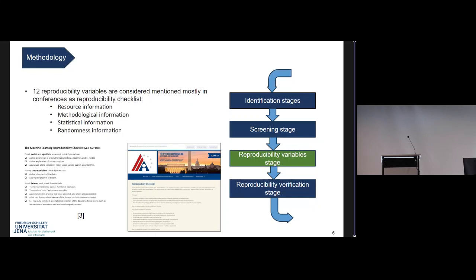Here comes the reproducibility variable stage where we try to verify. We dig into each paper selected in the previous steps and try to verify whether it is reproducible or not. For that, we have taken 12 reproducibility variables into account, drawn from the various factors already discussed — whether it is resource information, methodological, statistical randomness, and so on. These variables came mainly from previous research and from the reproducibility checklists provided by various renowned conferences, whether NEURIPS or AAAI. They provided the base criteria for how they consider a paper reproducible.